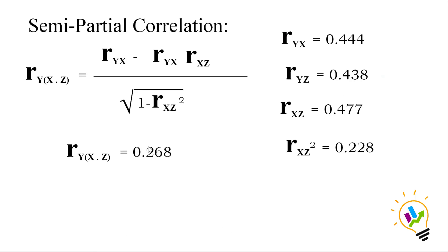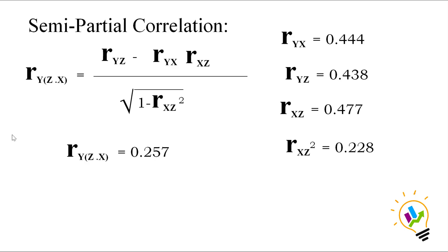Here is the formula for semi-partial correlation. In SPSS we cannot calculate semi-partial correlation directly; in regression analysis it is called part correlation. Using the formula with the same values — r_yx = 0.444, r_yz = 0.438, r_xz = 0.477 — and their squares substituted in, the semi-partial correlation of y and x controlling z is 0.268, and the semi-partial correlation of y with z controlling x is 0.257.